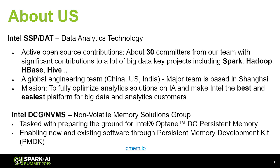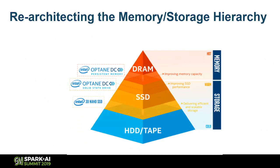Before we talk about anything Spark related, we have to first answer the question: what is Persistent Memory? Because that's a very new concept that not many people might have encountered before. Traditionally in your application, you have hot data located in DRAM, which is usually very small, very expensive, and volatile — all contents of DRAM vanish when the power goes down.